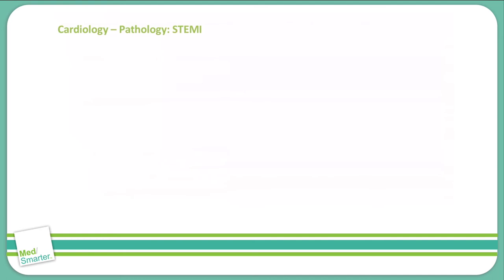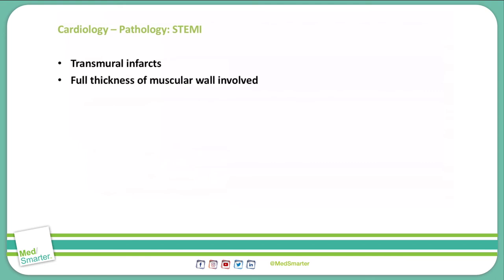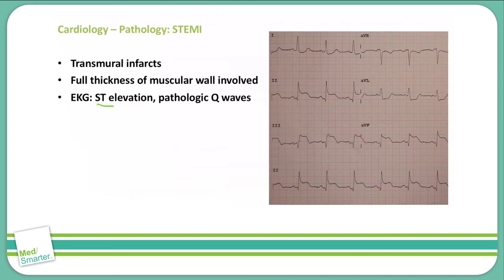Now let's discuss STEMIs, or ST elevation MIs. These are caused by a transmural infarction — the blood flow is cut off and the tissue dies through the entire thickness of the myocardium. On EKG you can see an ST elevation, hence the name STEMI, and we can also see pathologic Q-waves. You can see that here in leads 2 and 3, where we have ST elevations, and also pathologic Q-waves in lead 3 as well as AVF.